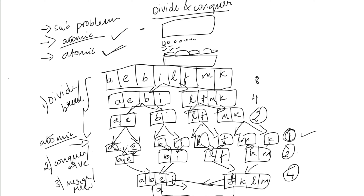After merging all sub-solutions, the final sorted result is: A, B, E, F, I, K, L, M — the alphabets sorted in order.